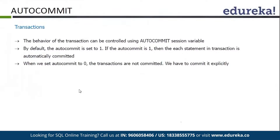Autocommit is by default 1. If the autocommit keyword is 1, then all transaction statements are committed automatically - we don't have to use the commit keyword at the end of the transaction. When it is 0, we have to provide the commit clause at the end of the transaction to commit all the queries.